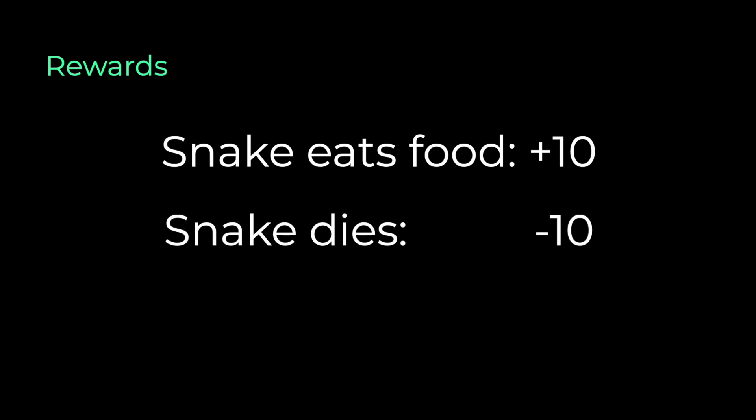Now the next question is how the rewards are measured. This is actually up to us. So we can come up with a good reward system for the game. In case of the snake game, for example, we can give a reward of 10 points if the snake eats an apple, and a reward of minus 10 points if the snake dies, and zero for every other normal move.